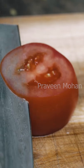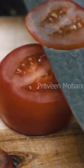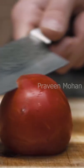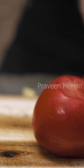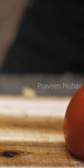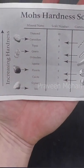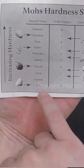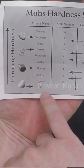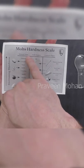To cut or carve anything, I have to use a tool harder than the object that needs to be cut. There is a scale called the Mohs hardness scale, where materials are categorized according to their hardness.